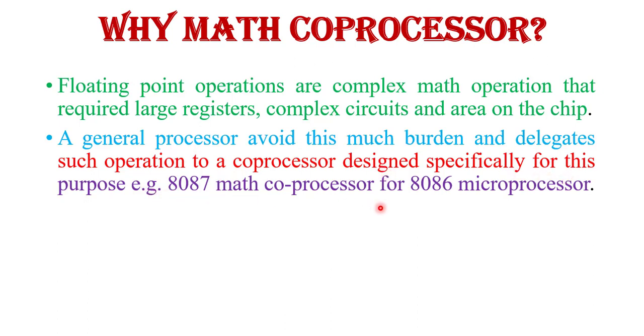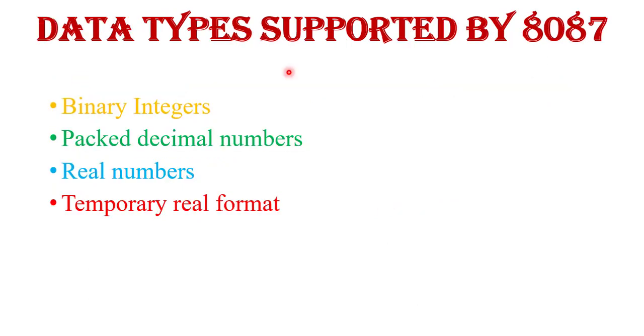Now data types supported by 8087: binary integer, packed decimal number, real number, temporary real format. These data types are supported by 8087 coprocessor.